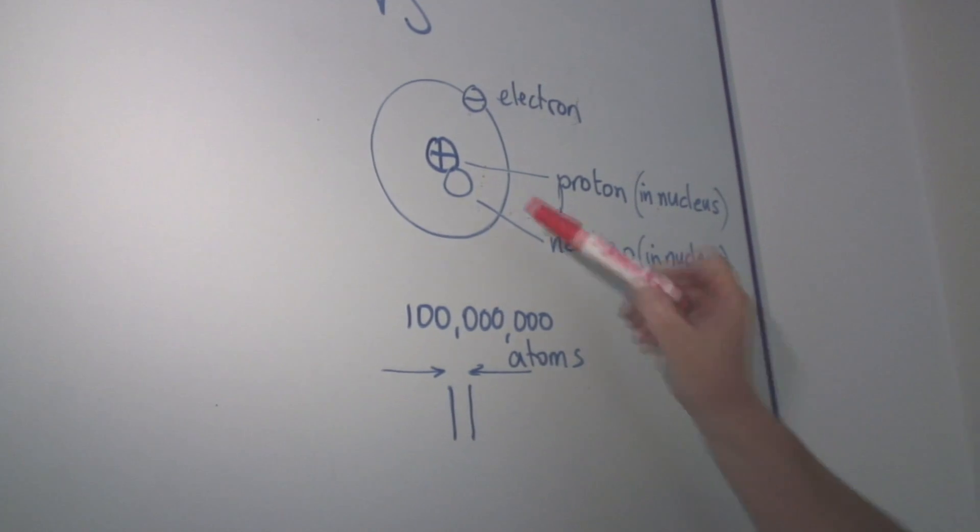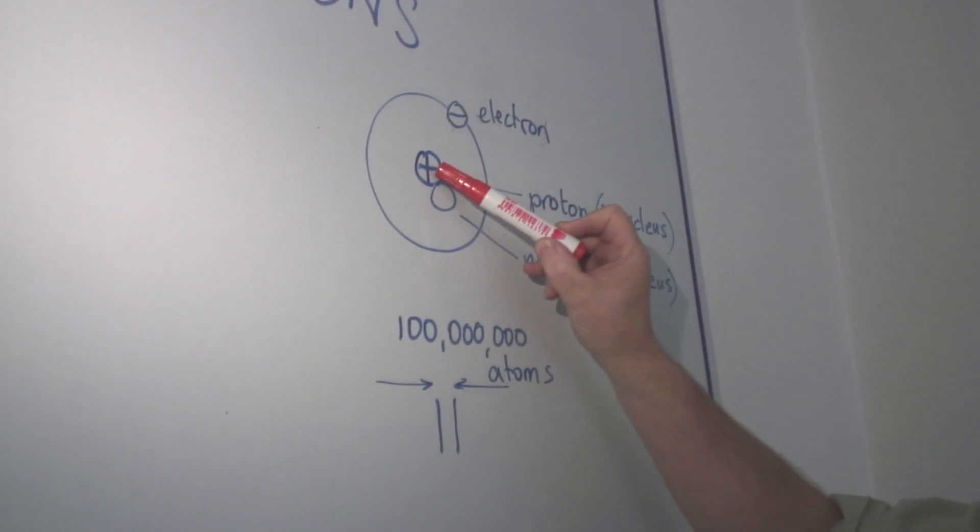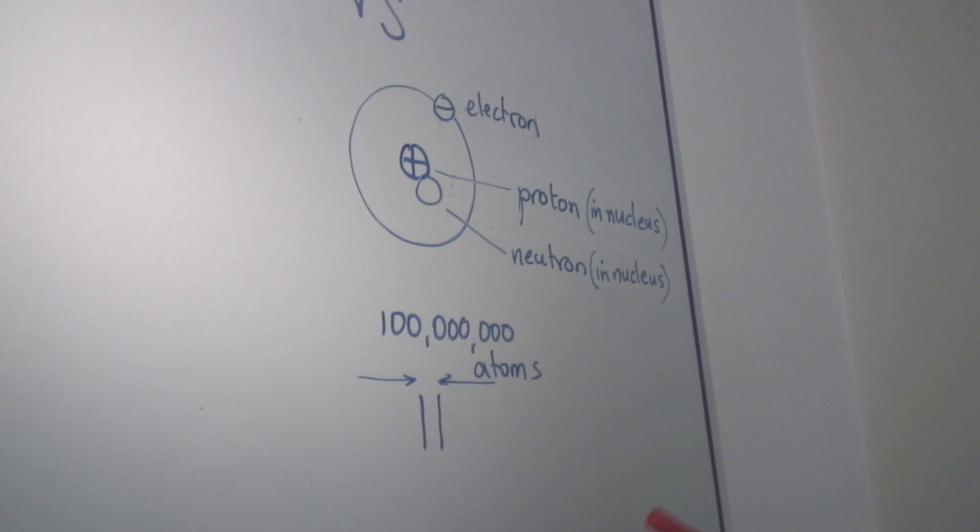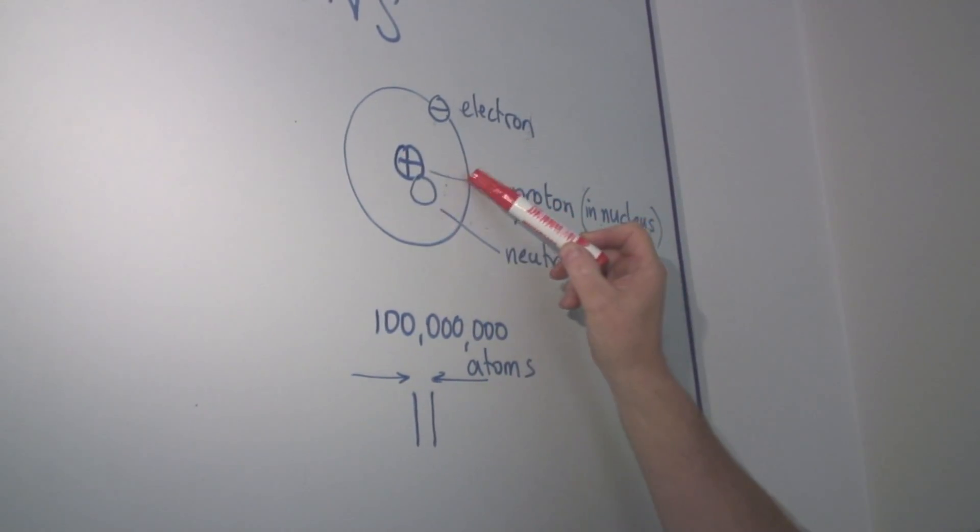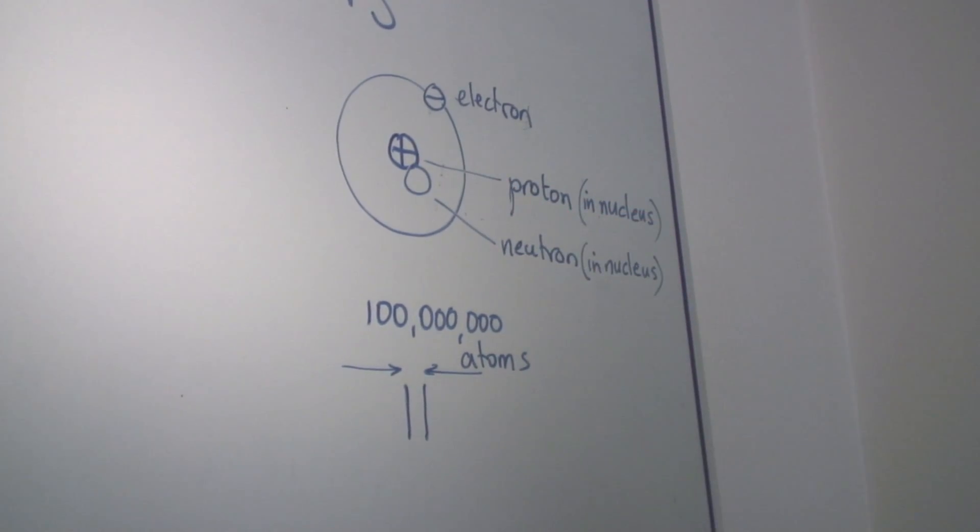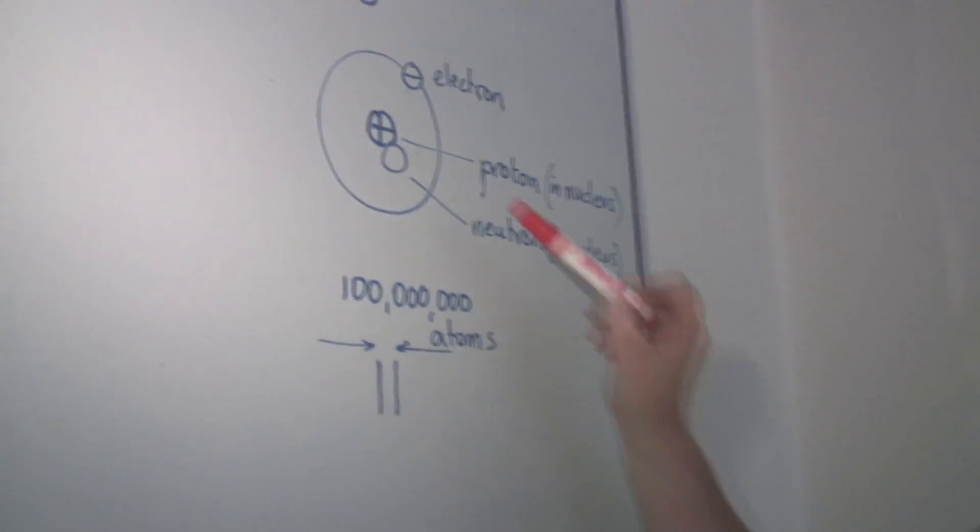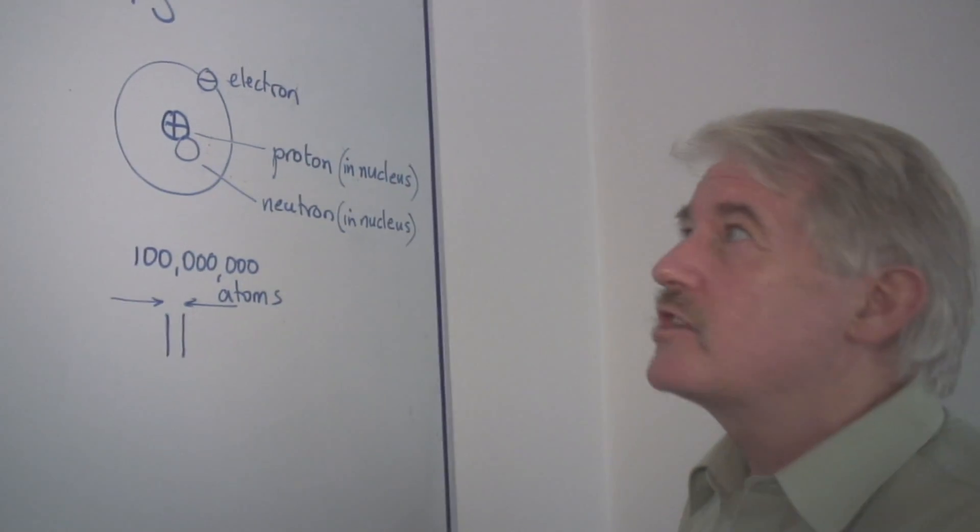And what is more, the proton in the middle of this atom actually only takes up something like one ten thousandth of the diameter of the atom. So protons are very, very small.